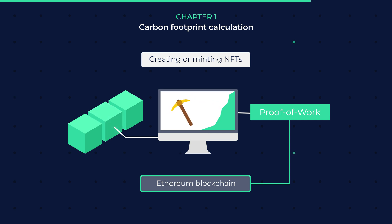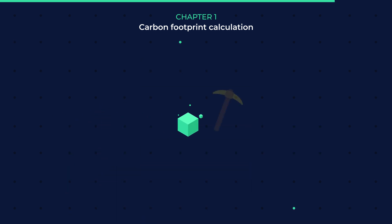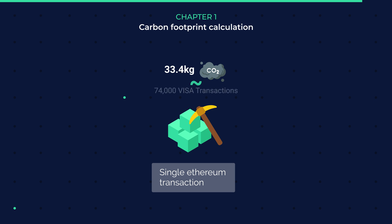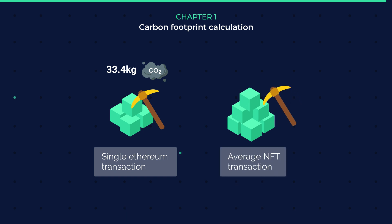This means that mining must be sufficiently challenging, or else the proof-of-work system is susceptible to faulty data. Looking at the mining process, a single Ethereum transaction has a carbon impact of 33.4 kilograms of CO2, which is roughly comparable to 74,000 Visa transactions. In contrast, the average transaction for NFTs has a carbon footprint of roughly 48 kilograms of CO2.